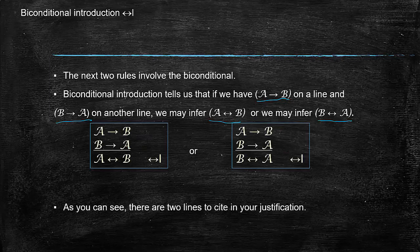So if A then B, if B then A gives us A if and only if B. If A then B, if B then A gives us B if and only if A. Okay, so we'll be citing in the justification two lines in each of these cases.